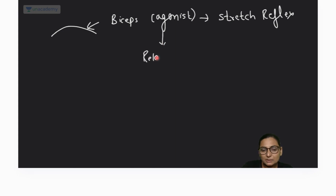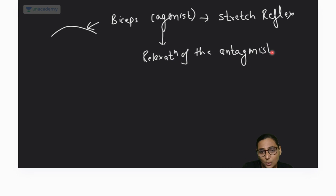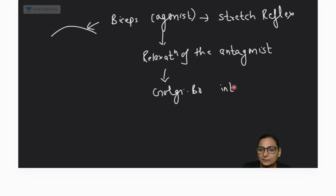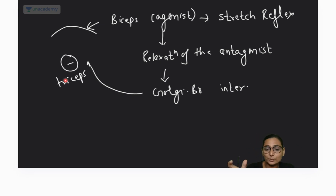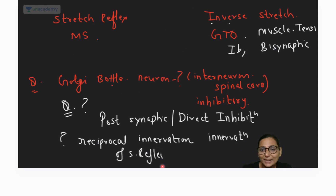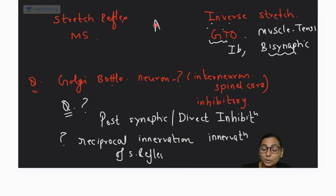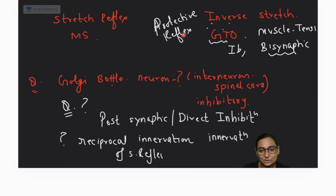...you must bring about relaxation of the antagonist. That relaxation of the antagonist is brought about with the help of the Golgi bottle interneuron — it inhibits the triceps so there is smooth movement. This is the reciprocal innervation of the stretch reflex. Inverse stretch reflex is the GTO or disynaptic reflex, also called an autogenic protective reflex — protecting muscle from tear due to high muscle tension.